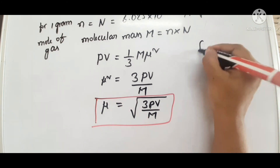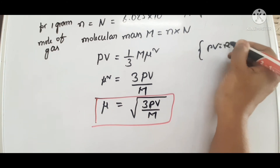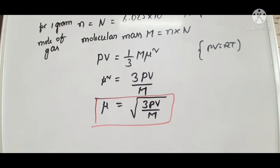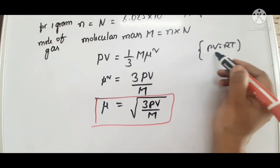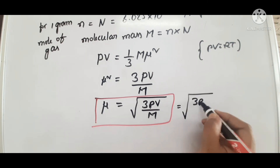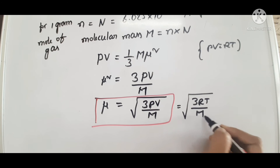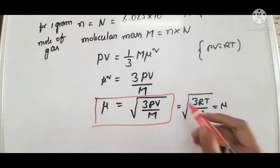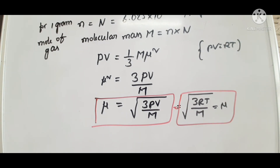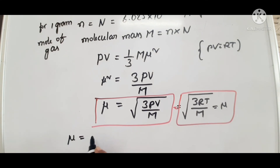From the ideal gas equation, PV equals RT (for one mole, n=1, PV equals RT). Substituting, mu equals square root of 3RT by M. Another form: since mass by volume is density, mu equals square root of 3P by density (d). So mu or C equals square root of 3PV by M or 3P by d.